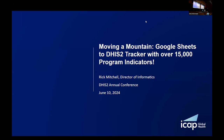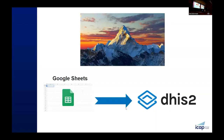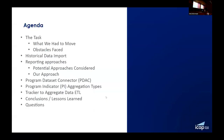I want to share an experience that we had at ICAP at Columbia University in New York. It was really a huge effort to move data from Google Sheets to DHIS2. Hopefully you can learn from the positives and the negatives of our experience. I'm going to talk briefly about what we had to move, some of the challenges that we faced, and bringing in all the historical data — which was a challenge in itself — and then talk about the different reporting approaches that we could have followed.